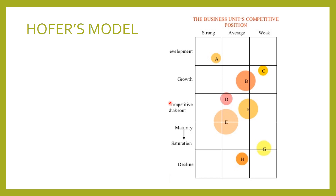Hoffer's model reflects the stage of development of the product or market. Business units are placed on a grid showing the stage of product market evolution and their competitive position. Hoffer's evolution metrics are used to develop strategies appropriate at different stages of the product life cycle from the development stage to the decline stage. The vertical axis represents the stages of product market evolution and the horizontal axis represents the competitive position — strong, average and weak.